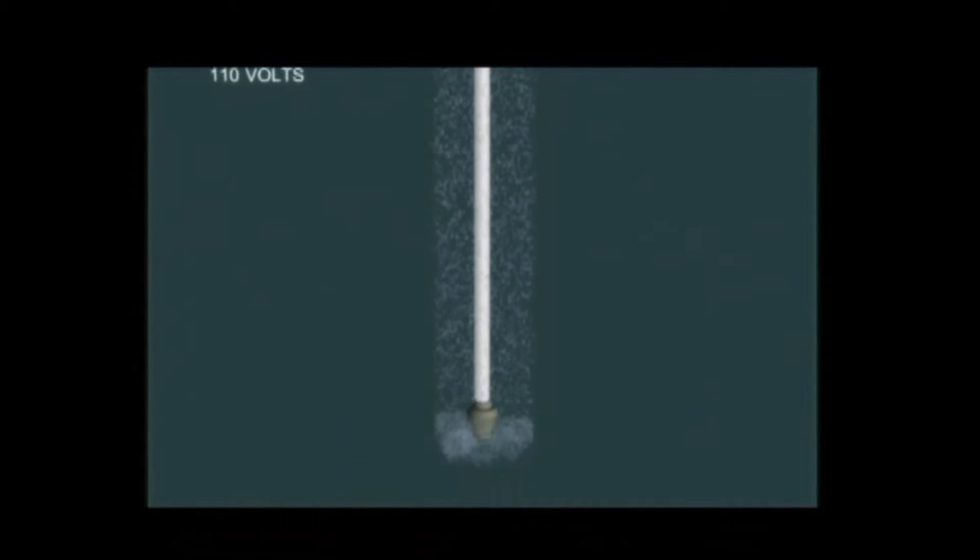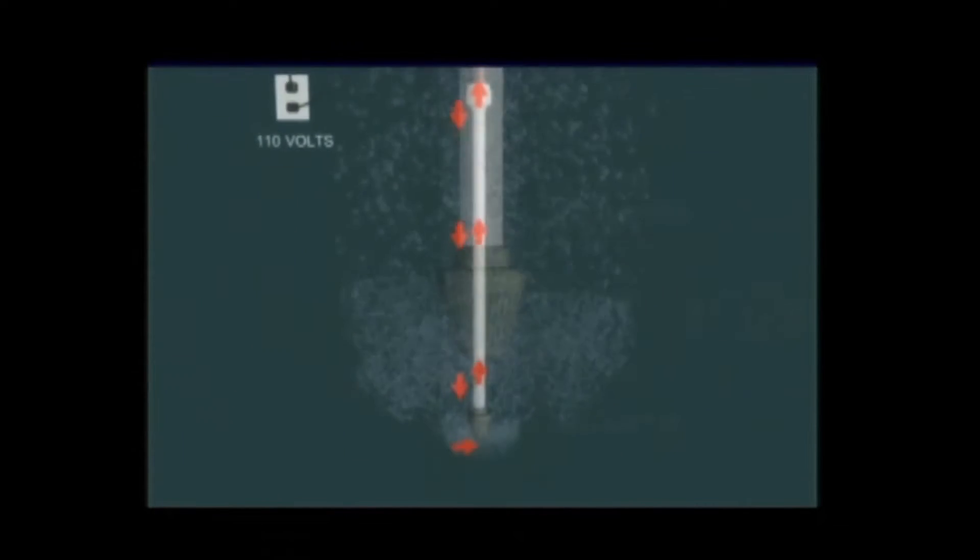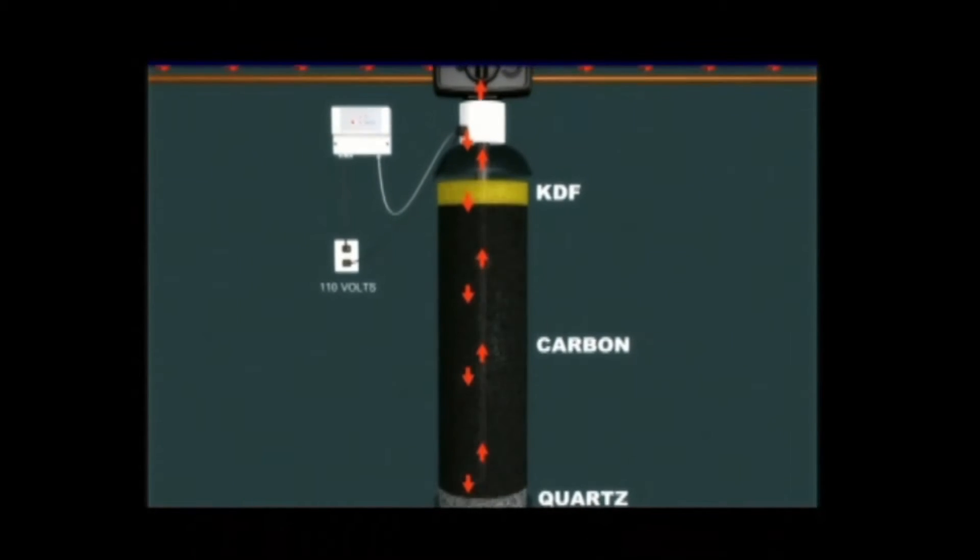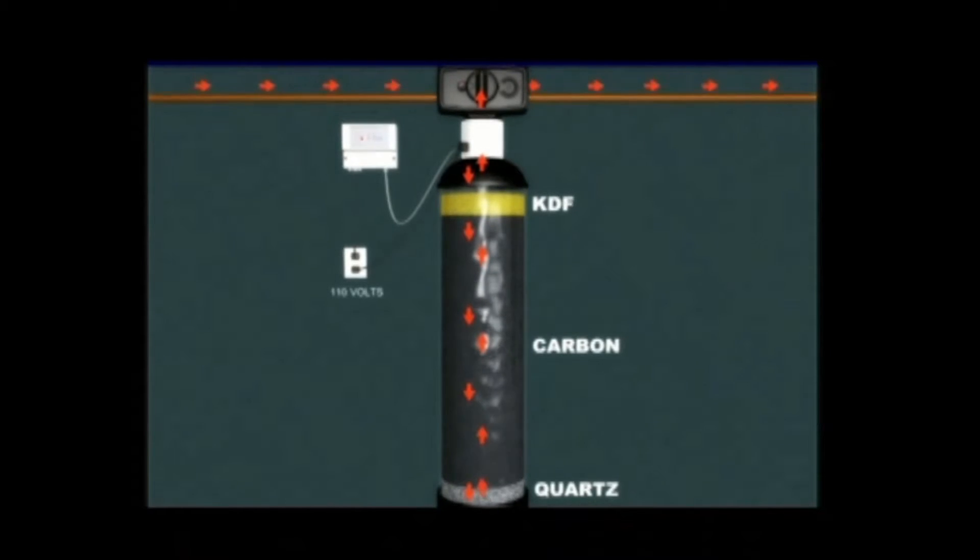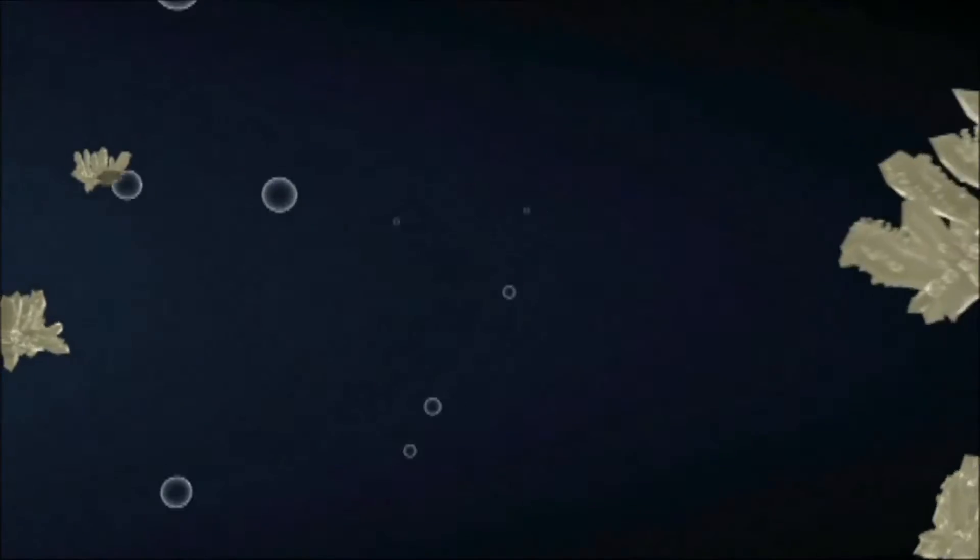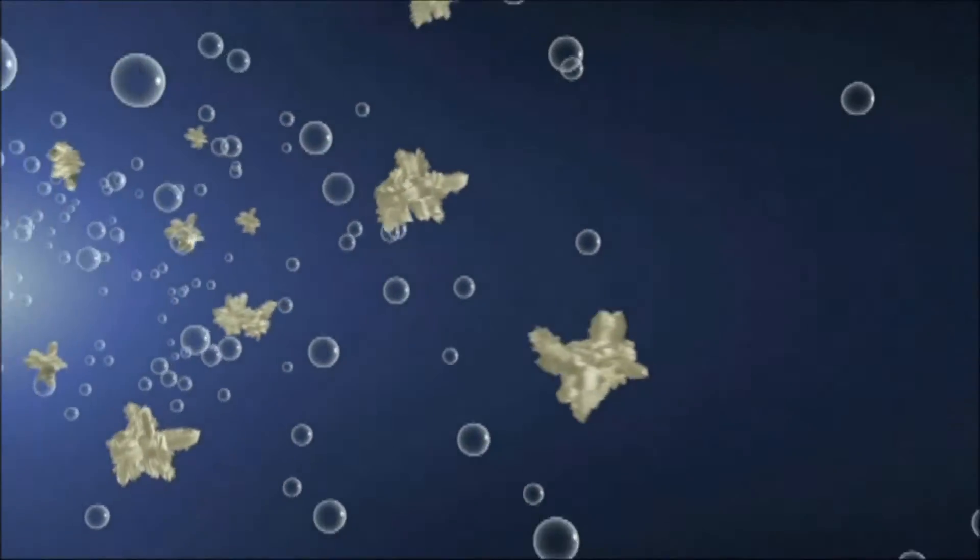With the H2O Concepts whole house water system, water travels into the main filtration chamber through a bed of activated carbon and KDF, a bacteriostat. Here, chlorine, heavy metals, and other contaminants are removed. Then water travels through the patented electronic portion of the system that treats water hardness.